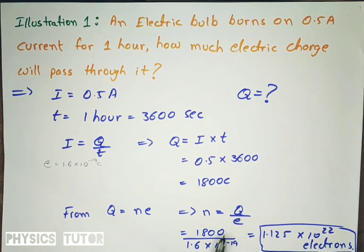So taking the value of Q is 1800 which we derived earlier, and value of e. Now if we divide this Q by e, that is 1800 by 1.6 times 10 raise to minus 19 coulomb, that is charge of electron, we will get number of electrons passing through the bulb.